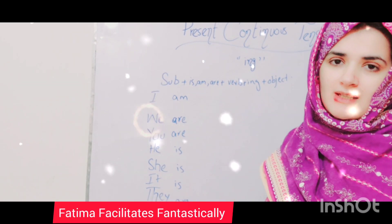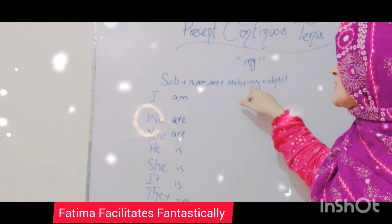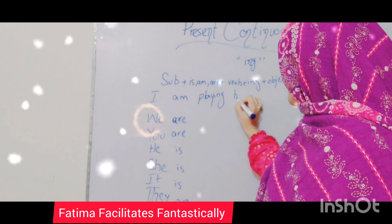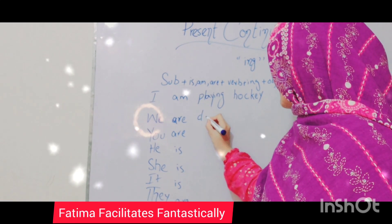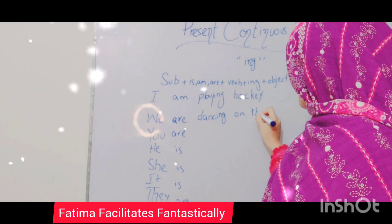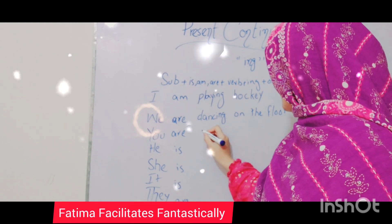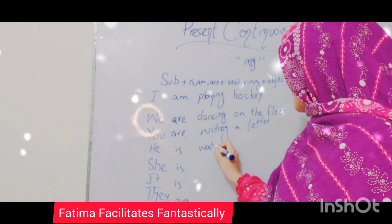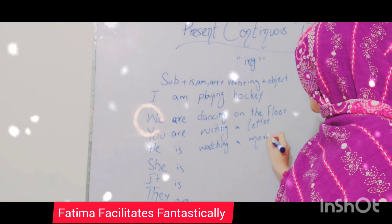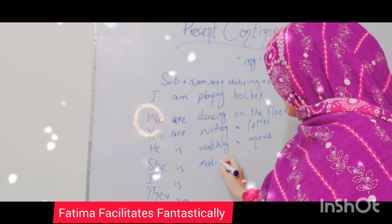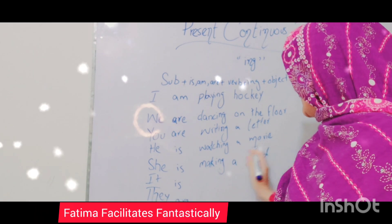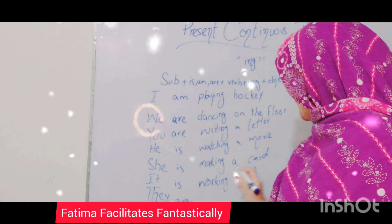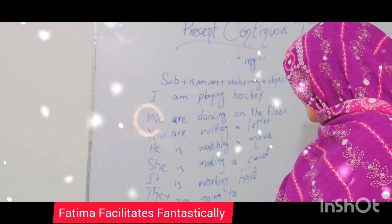The formula is: Subject + Helping Verb + Main Verb + ING. Examples: I am playing hockey. We are dancing on the floor. You are writing a letter. He is watching a movie. She is making a card. It is working hard. They are going to zoo.